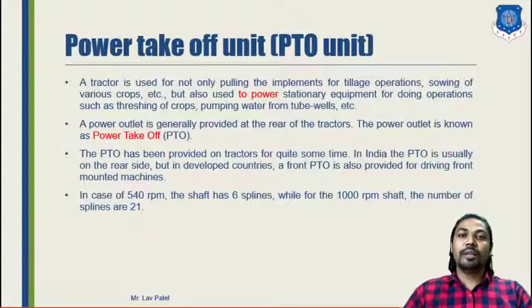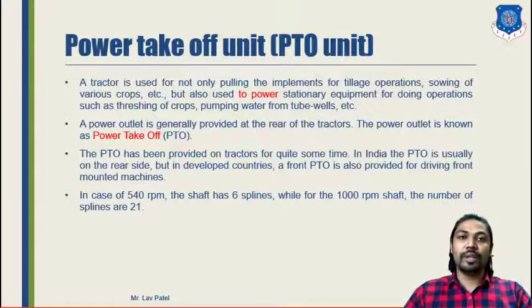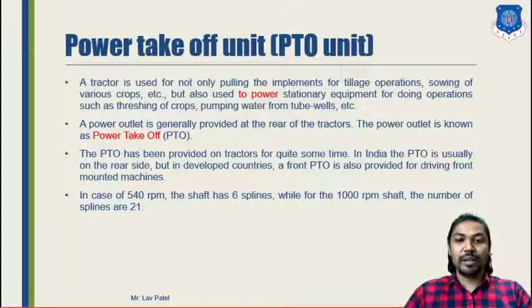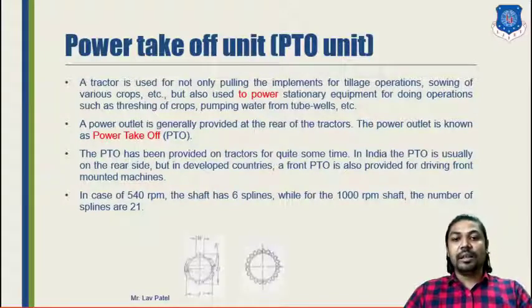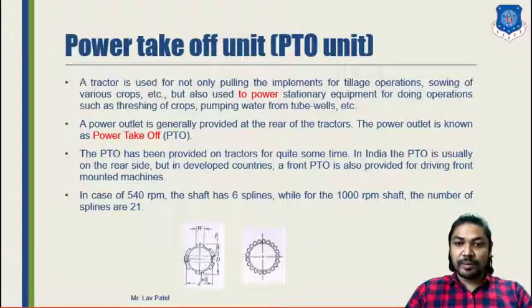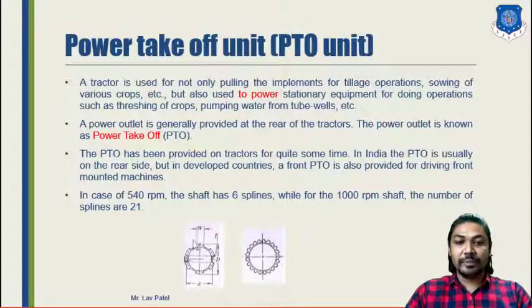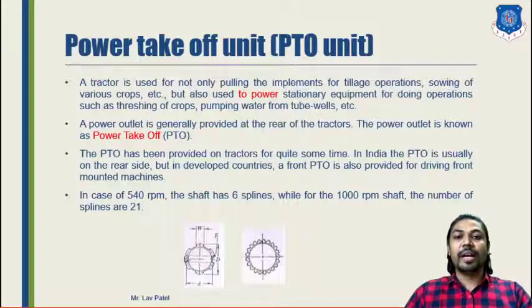From the output shaft after the differential, the RPM is controlled depending upon the application. For 540 RPM, the shaft has 6 splines that engage with the PTO shaft, while for 1000 RPM the number of splines is 21. As shown in the figures, the first figure shows 6 splines and the second figure shows 21 splines. Depending upon the RPM requirement and grip, we choose the appropriate splines.